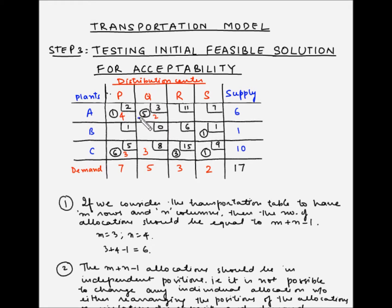Starting from cell AQ, we move horizontally to cell AP, then vertically to cell CP, then horizontally to cell CS, then to BS. From BS, there is no other allocation to help us move back to cell AQ without reversing the route. Since we cannot complete the loop back to the starting cell, this confirms that the allocations are in independent positions.